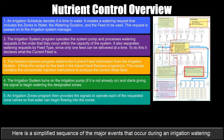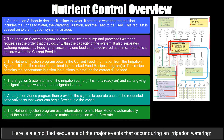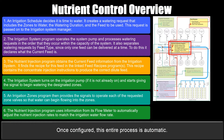An irrigation zones program provides signals to operate each of the requested zone valves so that water begins flowing into the zones. The nutrient injection program uses information from its flow meter to automatically adjust nutrient injection rates to match the irrigation water flow rate. Once configured, this entire process is automatic.